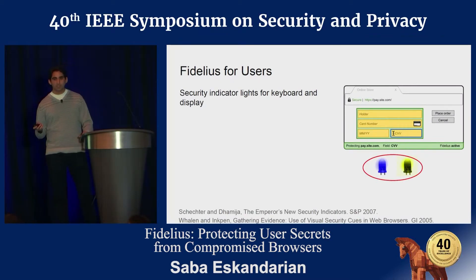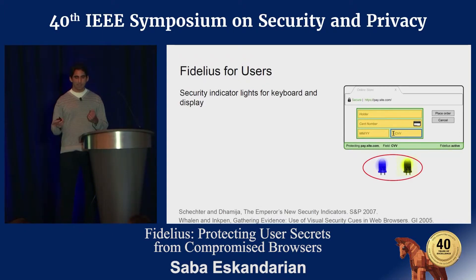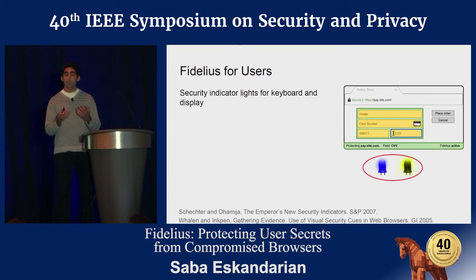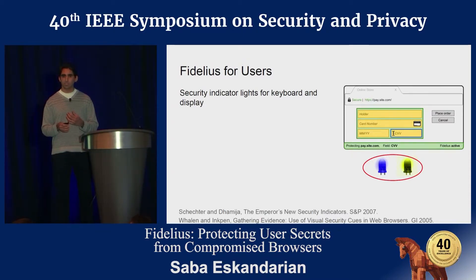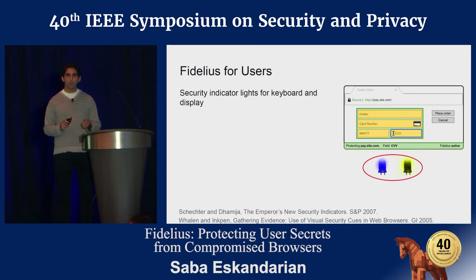In our prototype, the dongles have two lights. When keyboard and display move into trusted mode, these lights turn on. The display is always in trusted mode when viewing a Fidelius-secured website, since sensitive information is always shown. The keyboard may switch between trusted and untrusted inputs — for example, typing a social security number versus customer support feedback — and we need to switch accordingly between the Fidelius-secured keyboard and the normal one.